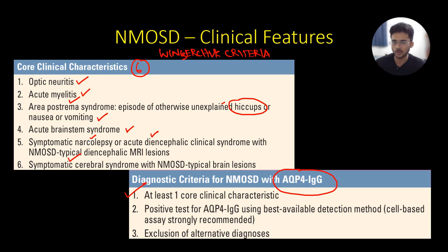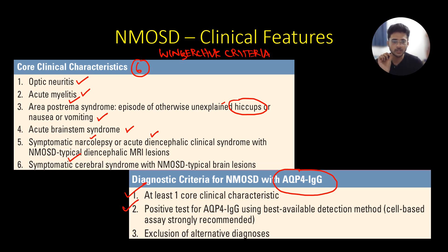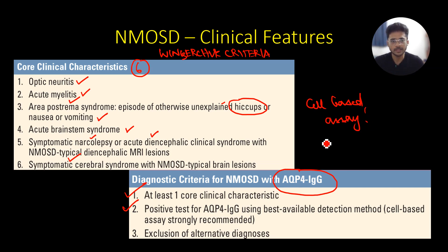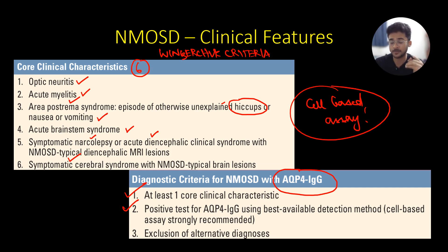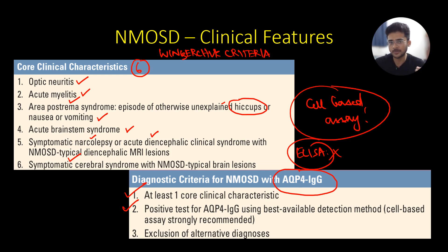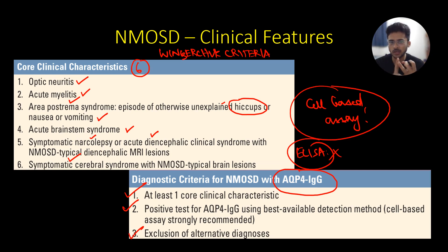There is a small caveat: the positive test for the IgG aquaporin-4 antibody should be done by the cell-based assay. Some labs may do an ELISA, so please do not interpret results as seropositive or seronegative based only on ELISA. Make sure it is done by cell-based assay. Additionally, there should be exclusion of alternative diagnoses. So: seropositive by cell-based assay, one core clinical characteristic, and exclusion of alternatives.